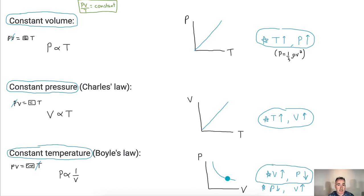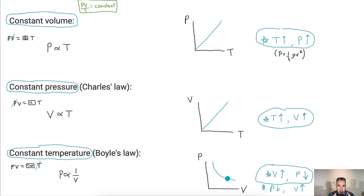You can see this in videos of hot air balloons or balloons taken to really high altitude. As you get closer to space, the pressure decreases and the volume of the gas actually expands. These are empirical results you can determine from experiments.